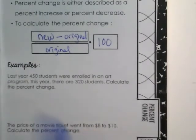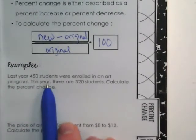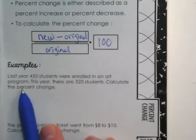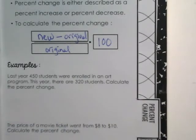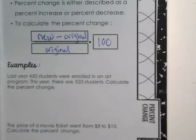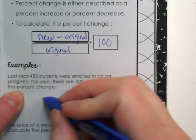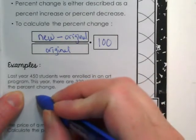For example, last year 450 students were enrolled in an art program. This year there are 320 students. What's the new and what's the original? The new is 320 and the original is 450. Okay, so we are going to set this up as 320 minus - I'm sorry, the original was 450 as you said - we divide by the original and we multiply all of that times 100.